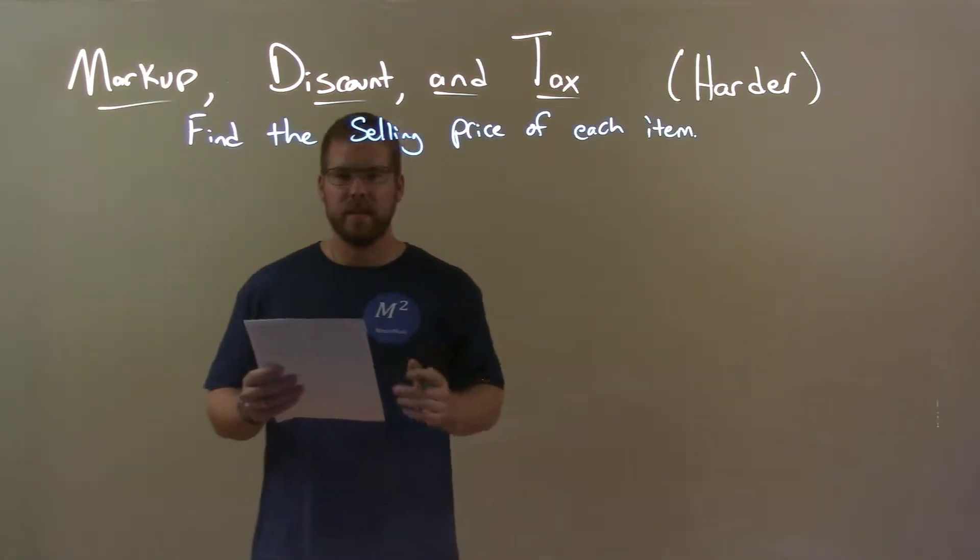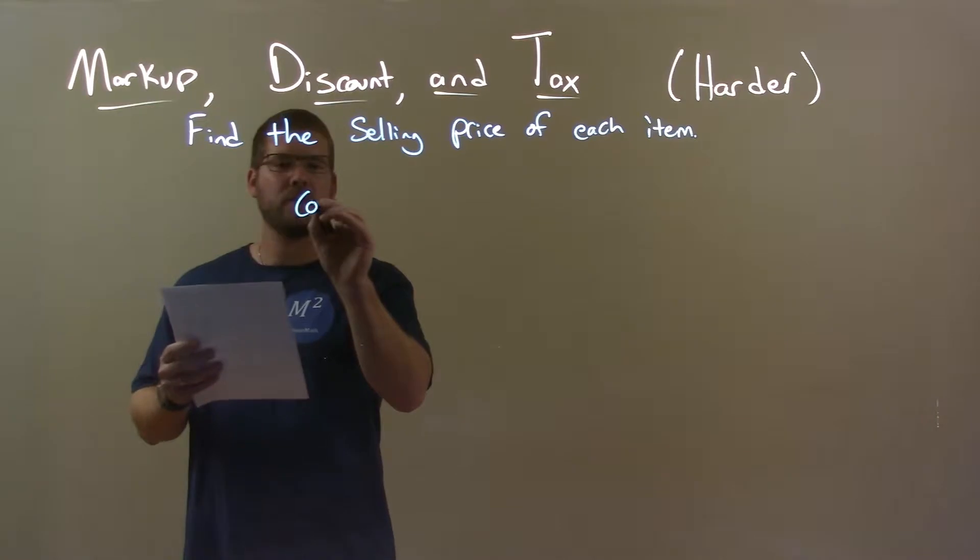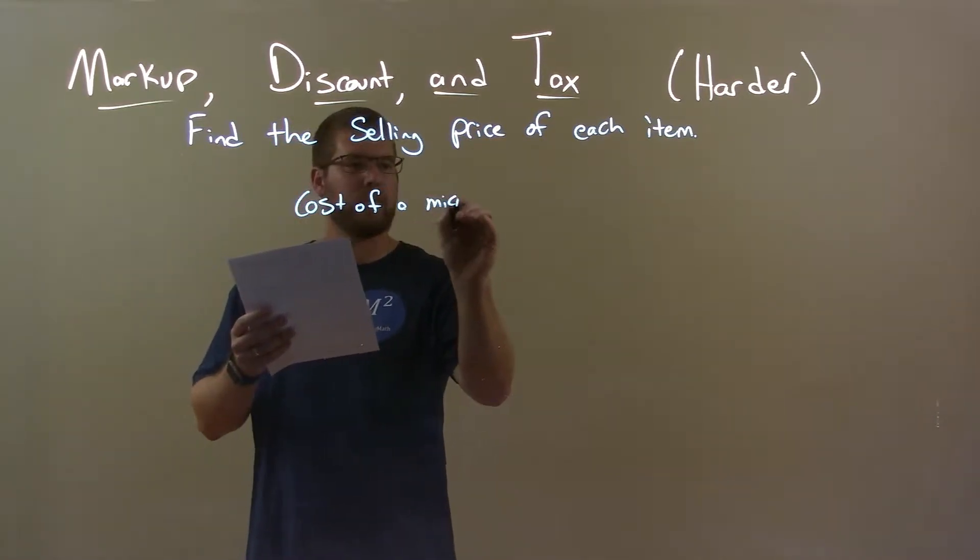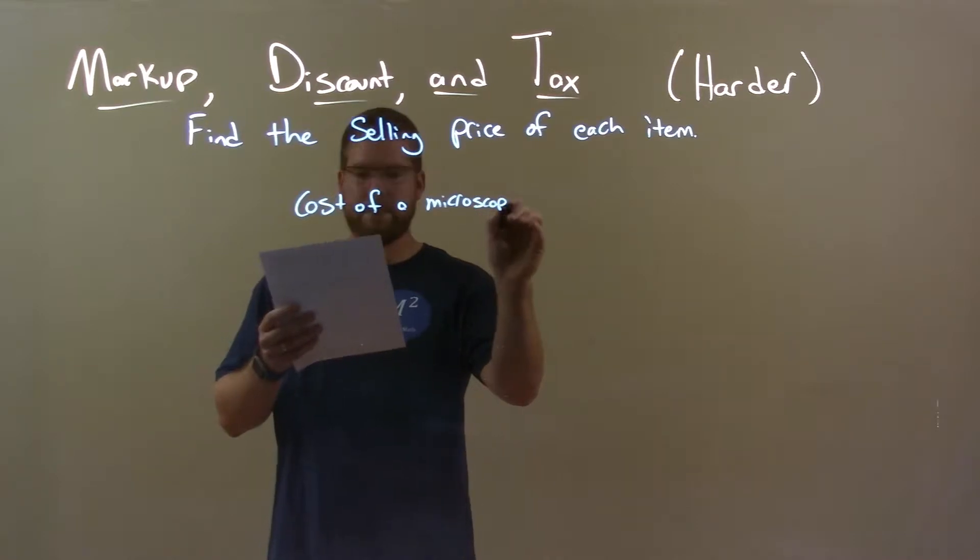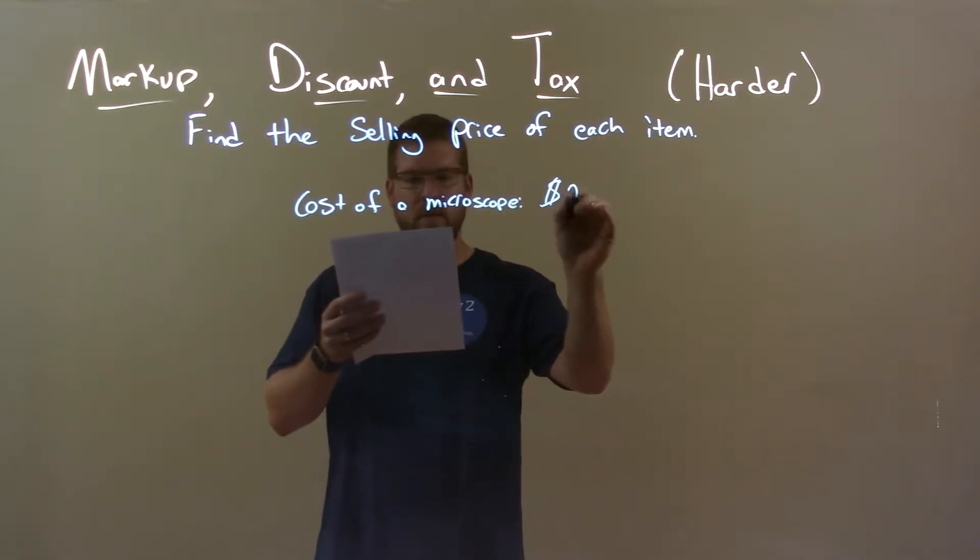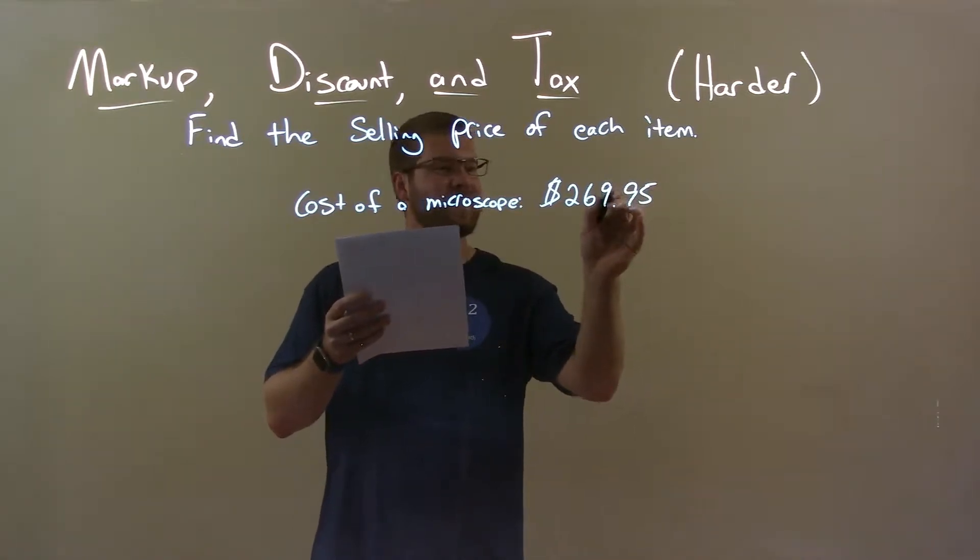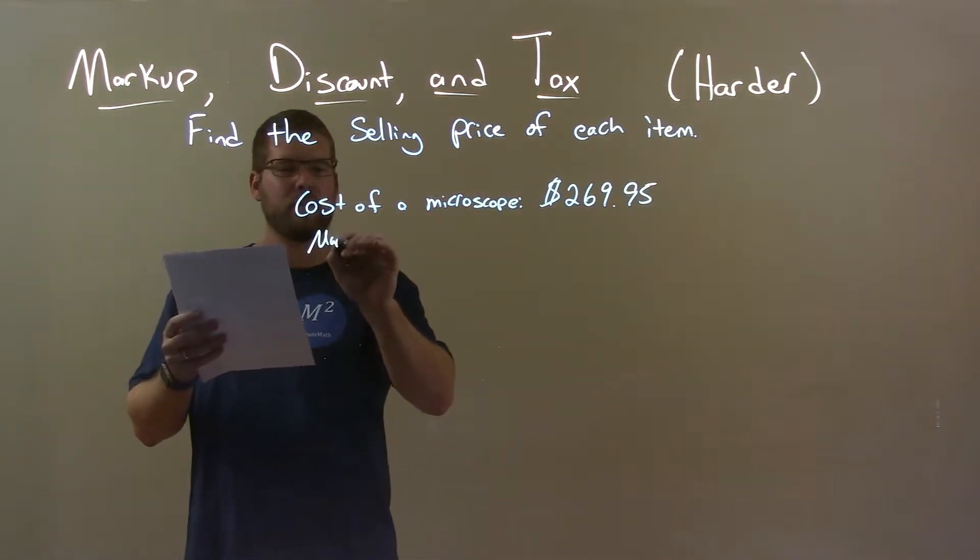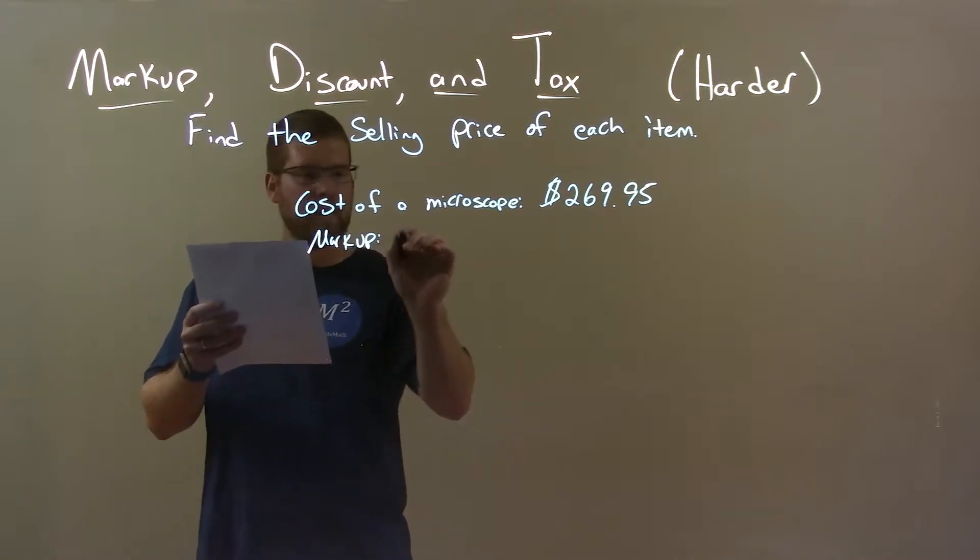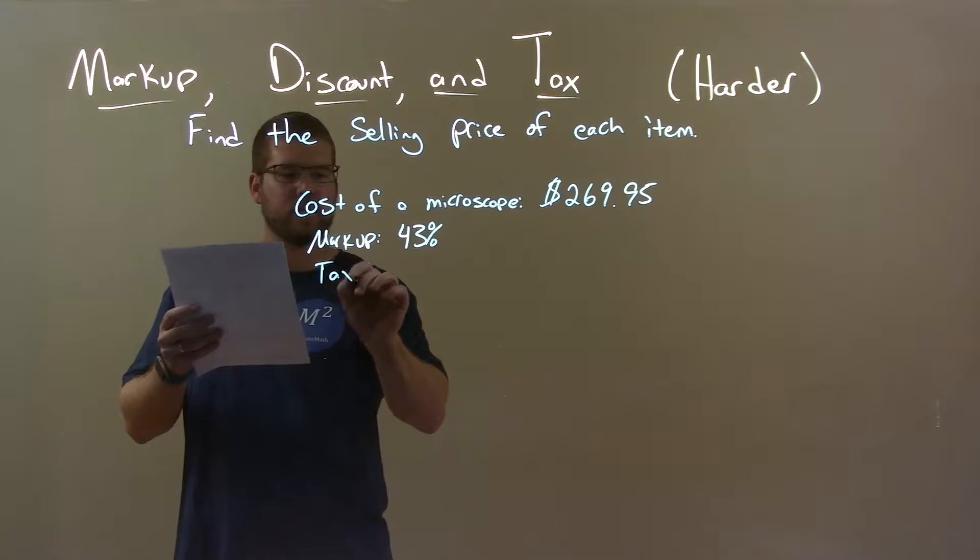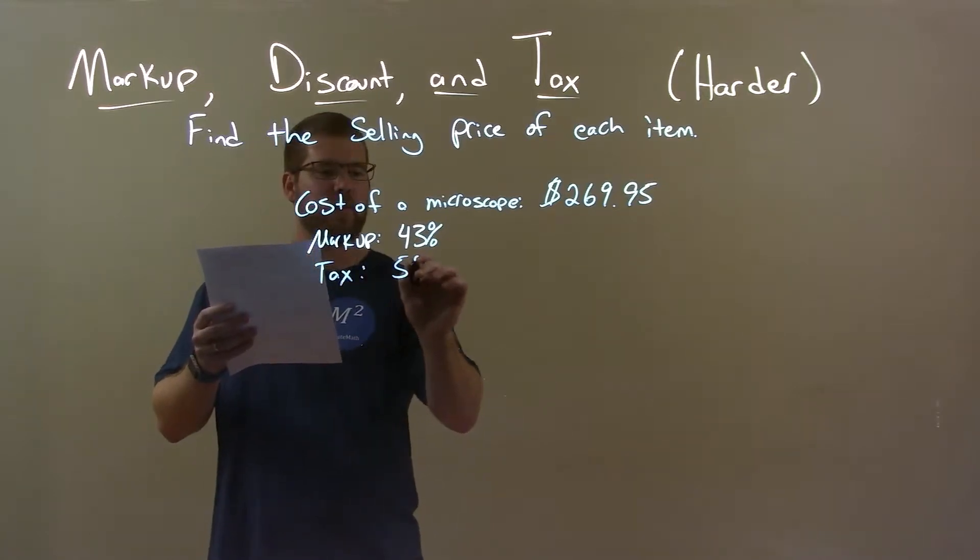So, if I was given this item, the cost of a microscope is $269.95. Its markup is 43%, and its tax is 5%.